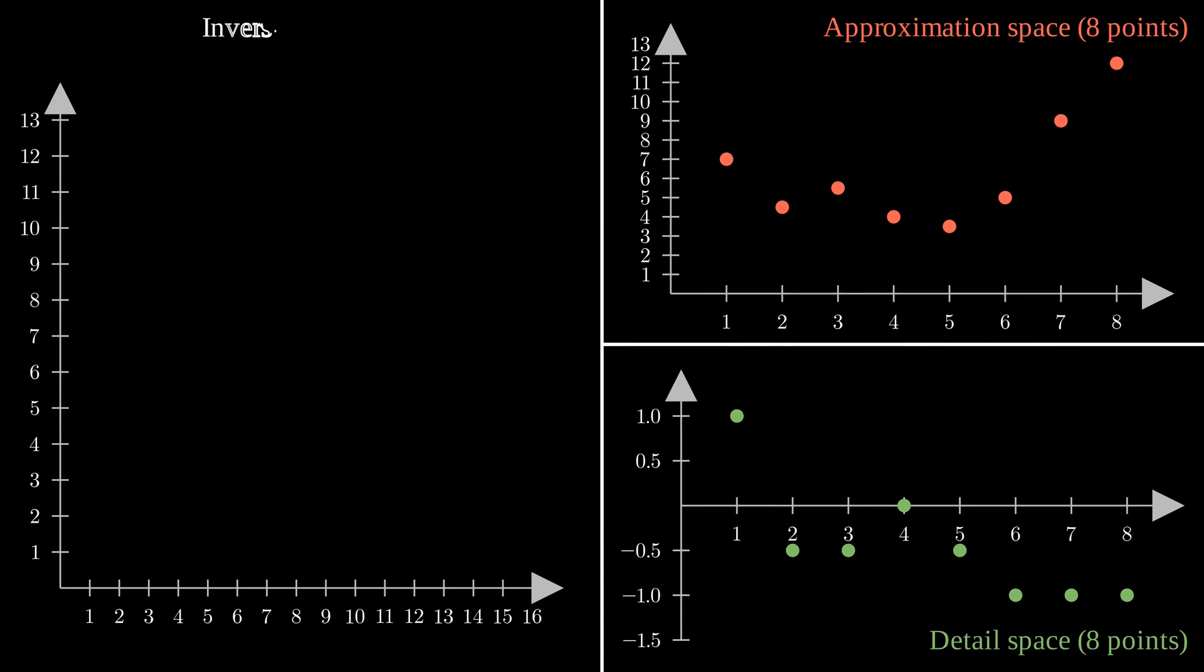You can see that no information was lost in the process. We can rebuild our original signal using the two sub-signals we've just computed. To do so, we take a point in the approximation space and place it on our graph. Then we take the corresponding point in the detail space and add it to the point we've just placed on the graph to get back the original first point of the signal. The second point is easily computed by symmetry.